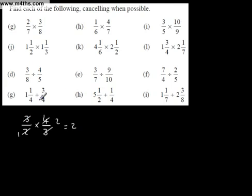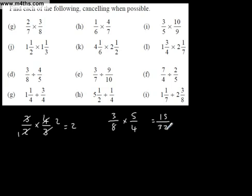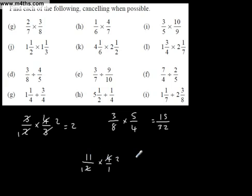Division of fractions — absolutely essential. We turn the second one round and multiply. So 3 over 8 divided by 5 over 4 becomes 3 over 8 multiplied by 4 over 5. We start cancelling once we've turned it around. We look for anything we can simplify — and the answer here is no — so we end up with 15 over 32. With mixed numbers, 5 and a half is 11 over 2. You then multiply by the reciprocal, which is 4 over 1. This will cancel to 1 and 2, leaving us 22 over 1, which is 22.